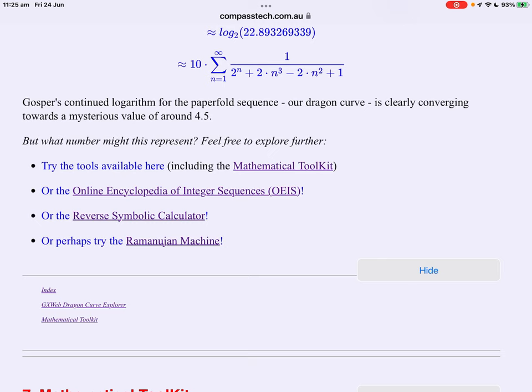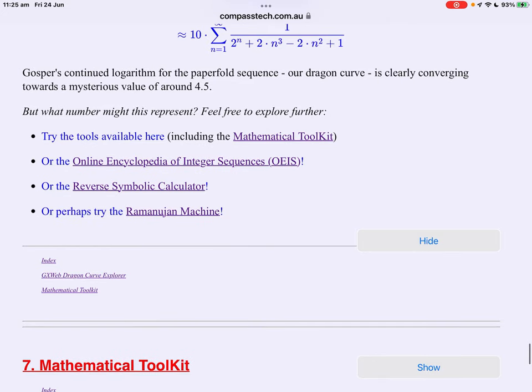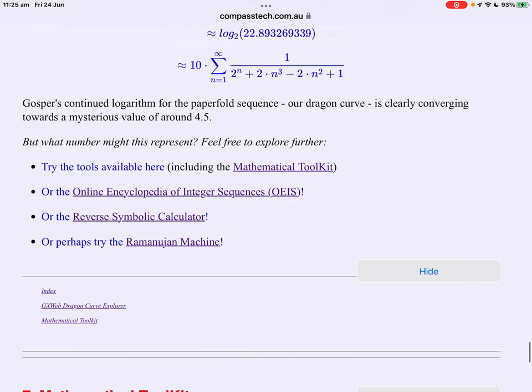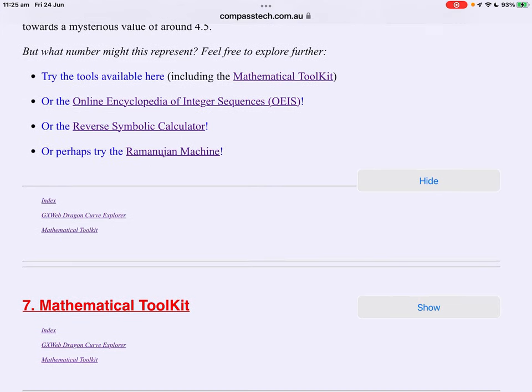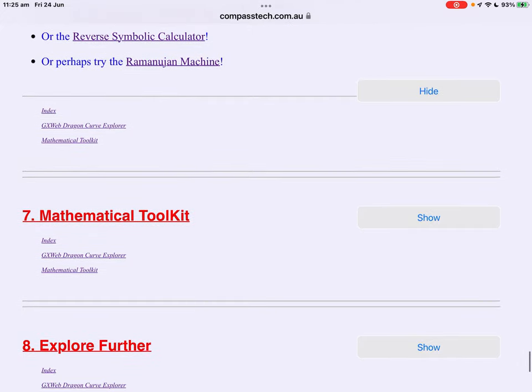So here in this page we have various tools available to dig more deeply or a link here to the online encyclopedia or the reverse symbolic calculator which gave me those two forms or another device called the Ramanujan machine. And again I'll let you play with that.